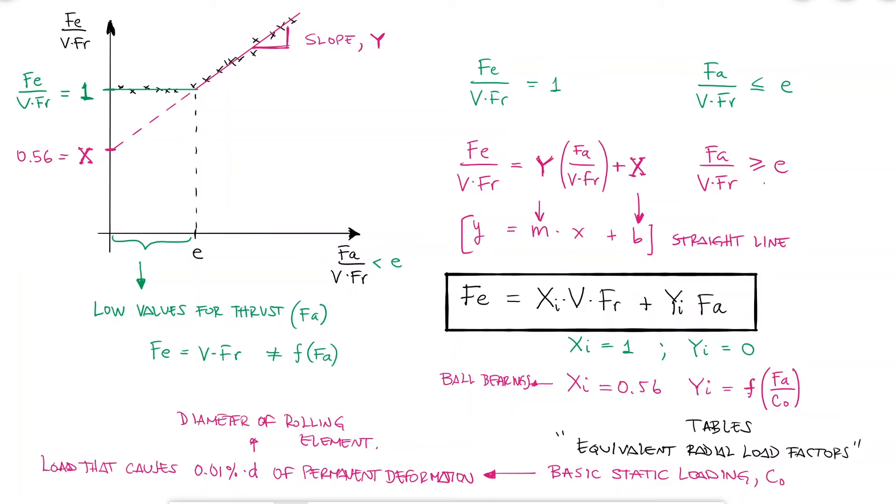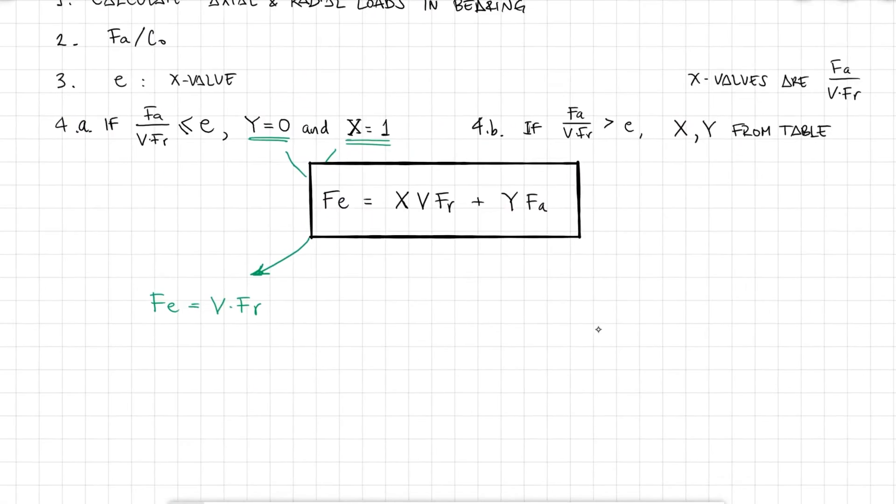If FA over VFR is not lower than E, then the axial load is not negligible and you get your equivalent radial load by looking up the capital X and the capital Y coefficients from a radial load factor table for the type of bearing you're using. Two additional things to point out before looking at today's example.